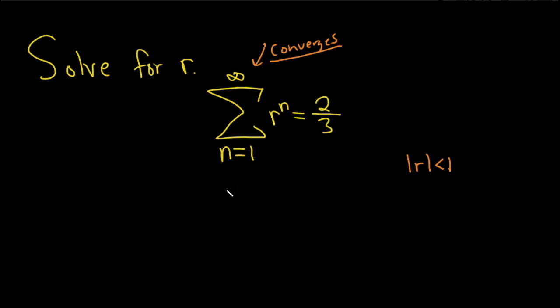So because it's a convergent geometric series, all we have to do is use the formula to find the sum of this series, and then set it equal to 2 thirds.